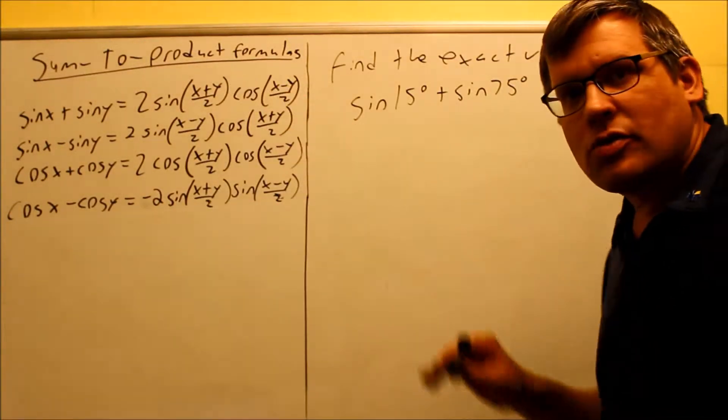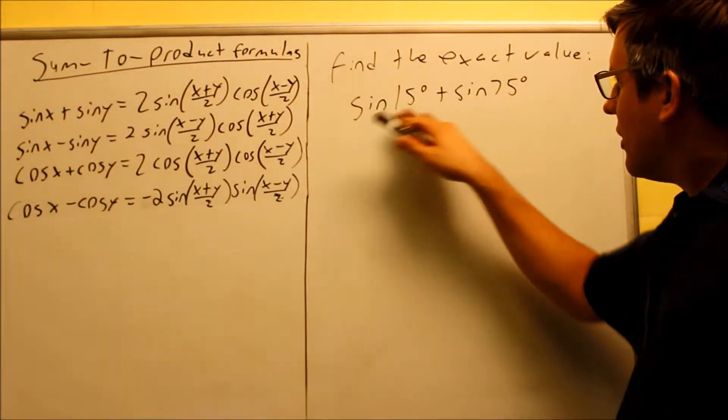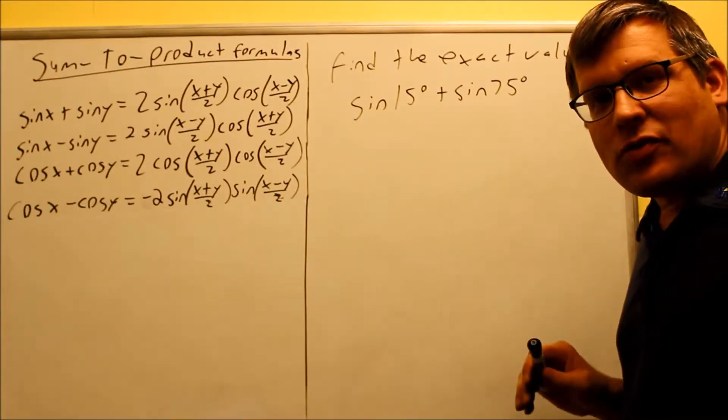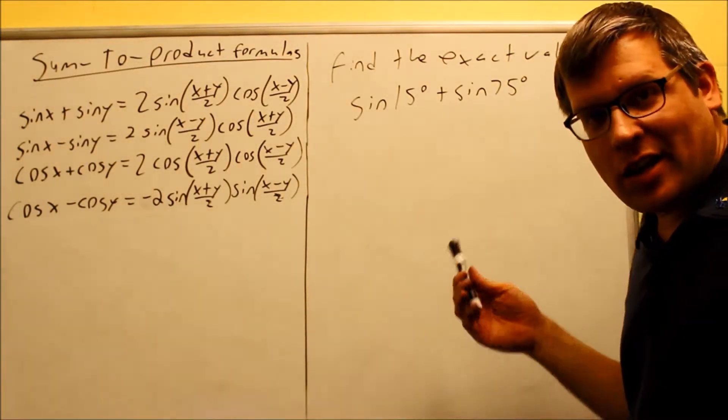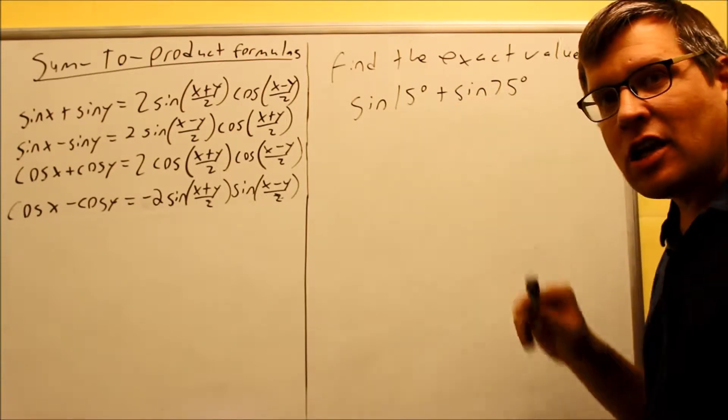Here's another application of the sum-to-product formulas. We have sine of 15 degrees plus sine of 75 degrees we want to find. Now we can't add these together and get sine of 90. These are not like terms. You can't add the angles together.